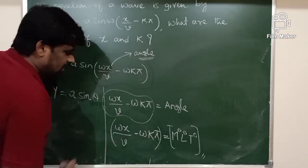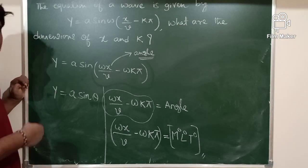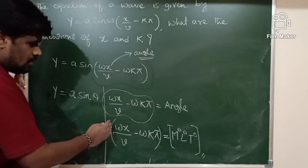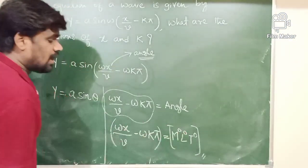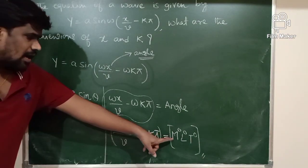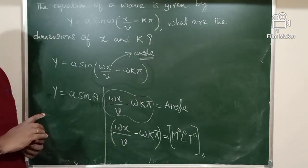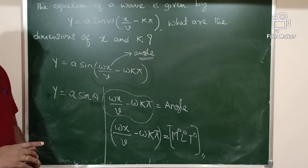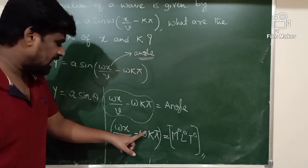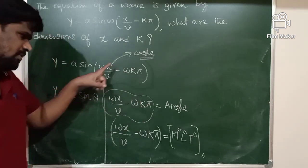You know very well: two or more quantities can be added, subtracted, or equated provided they have the same dimensions. If the entire term is dimensionless, then both ωX/V and ωK·π are also dimensionless, according to the principle of homogeneity.